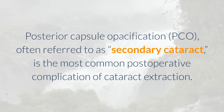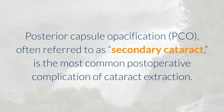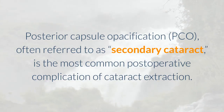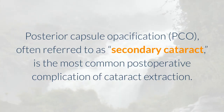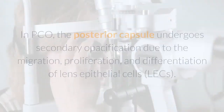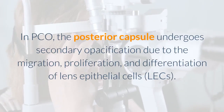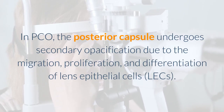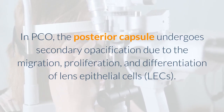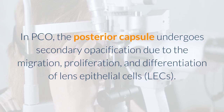Posterior capsule opacification PCO, often referred to as secondary cataract, is the most common postoperative complication of cataract extraction. In PCO, the posterior capsule undergoes secondary opacification due to the migration, proliferation, and differentiation of lens epithelial cells (LECs).